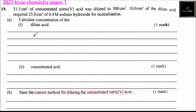Question number 19. 1.5 cm³ of concentrated nitric acid was diluted to 500 cm³. 10 cm³ of the dilute acid required 25 cm³ of 0.4 M sodium hydroxide for neutralization.